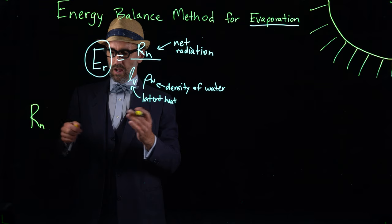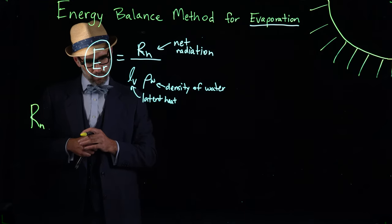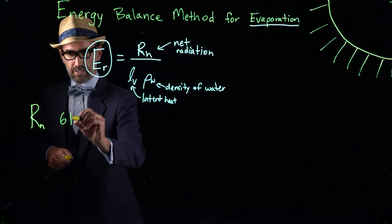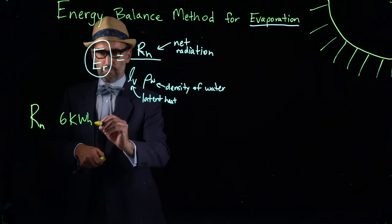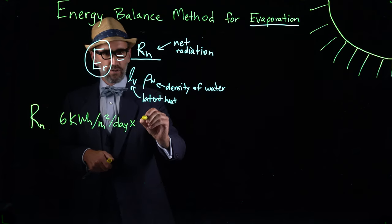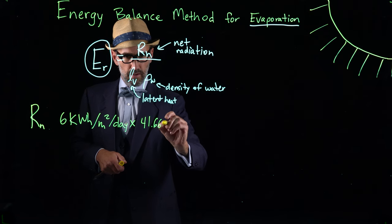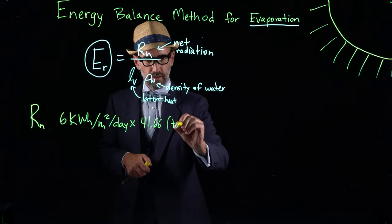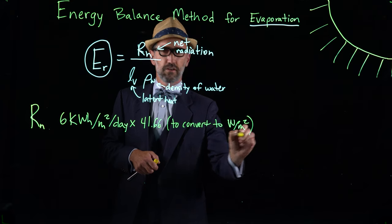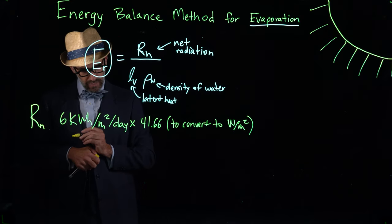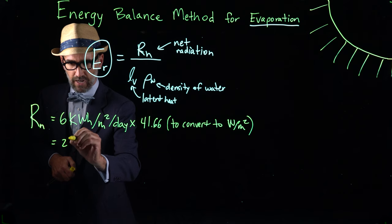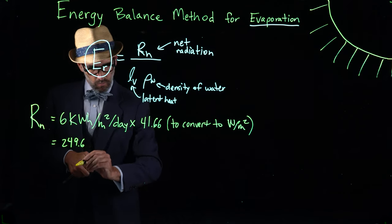This is just a unit conversion from our photovoltaic solar resource map. We saw that the average resource in Phoenix is 6 kilowatt hours per meter squared per day. And the unit conversion of this is 41.66 to convert to watts per meter squared, which is the units we want for net radiation.